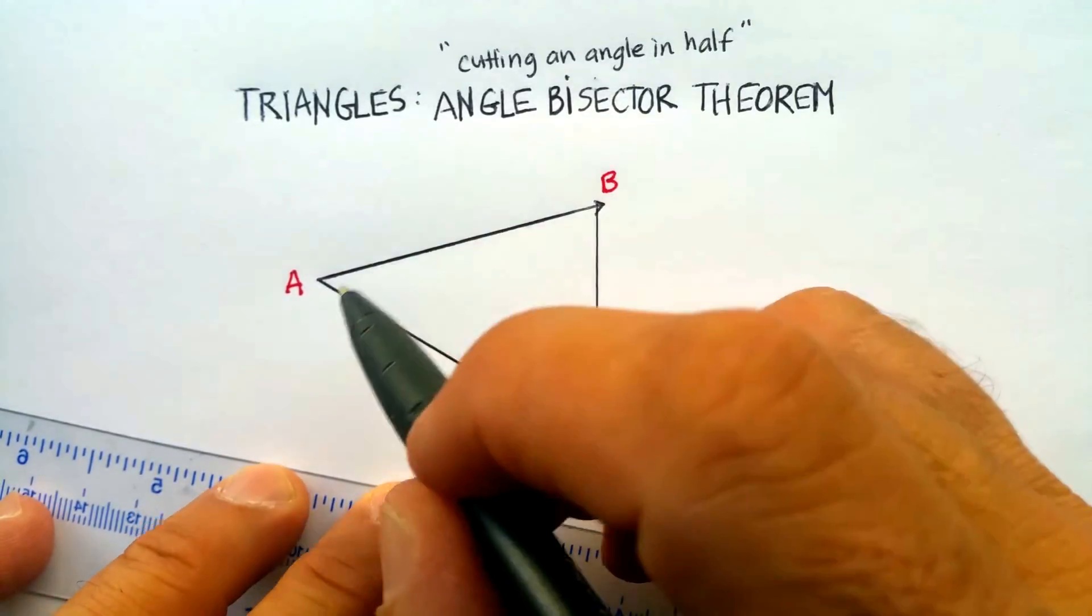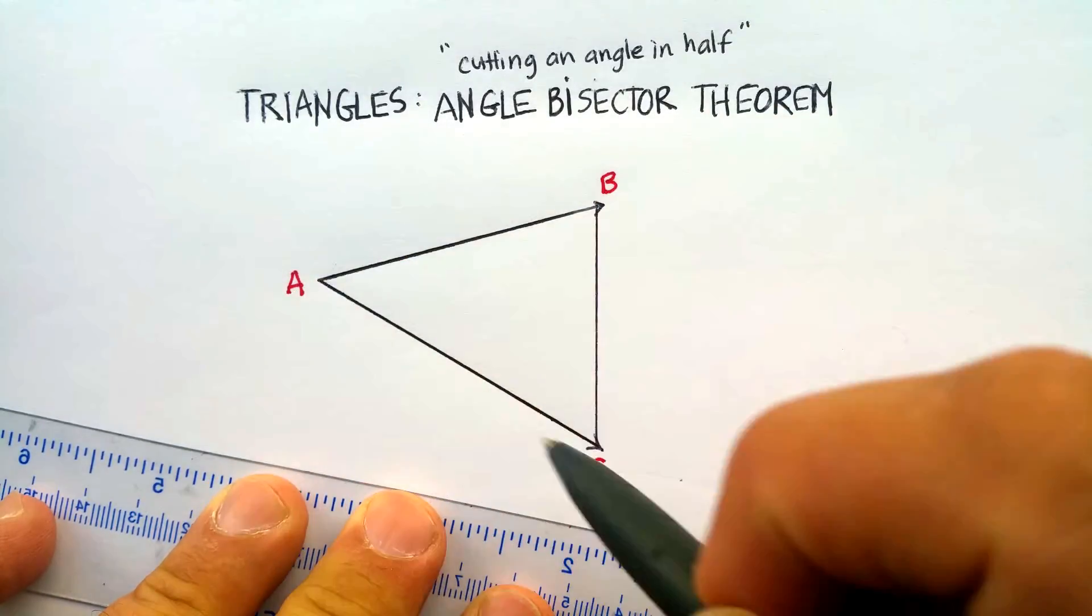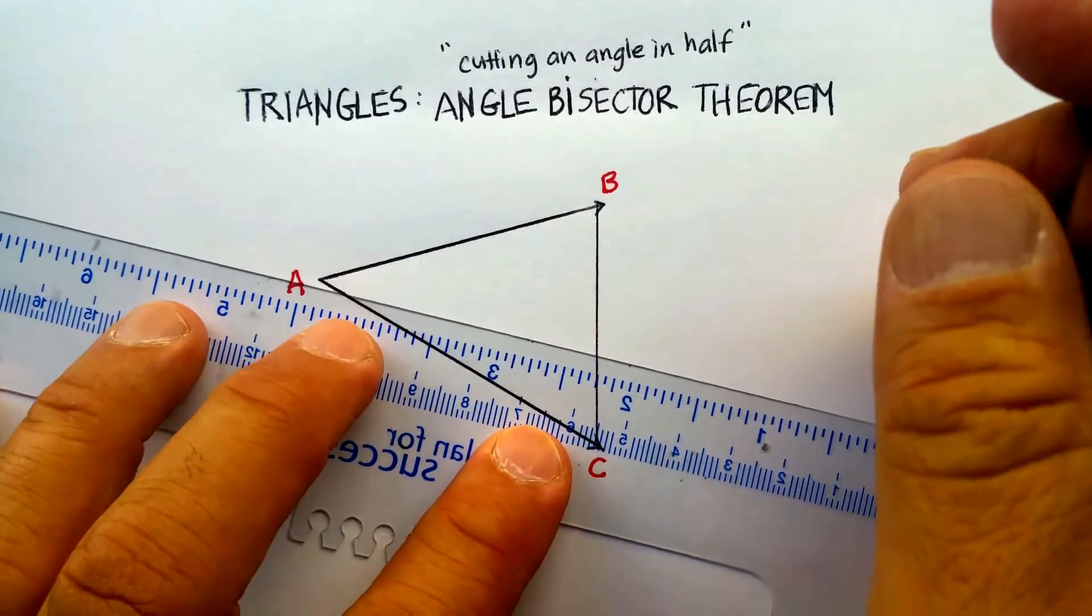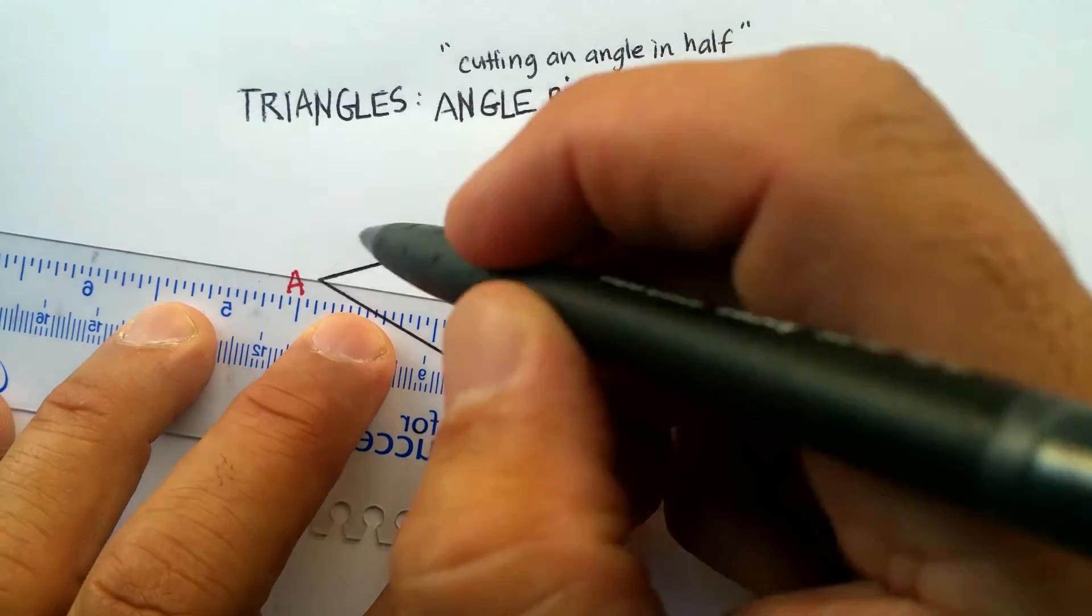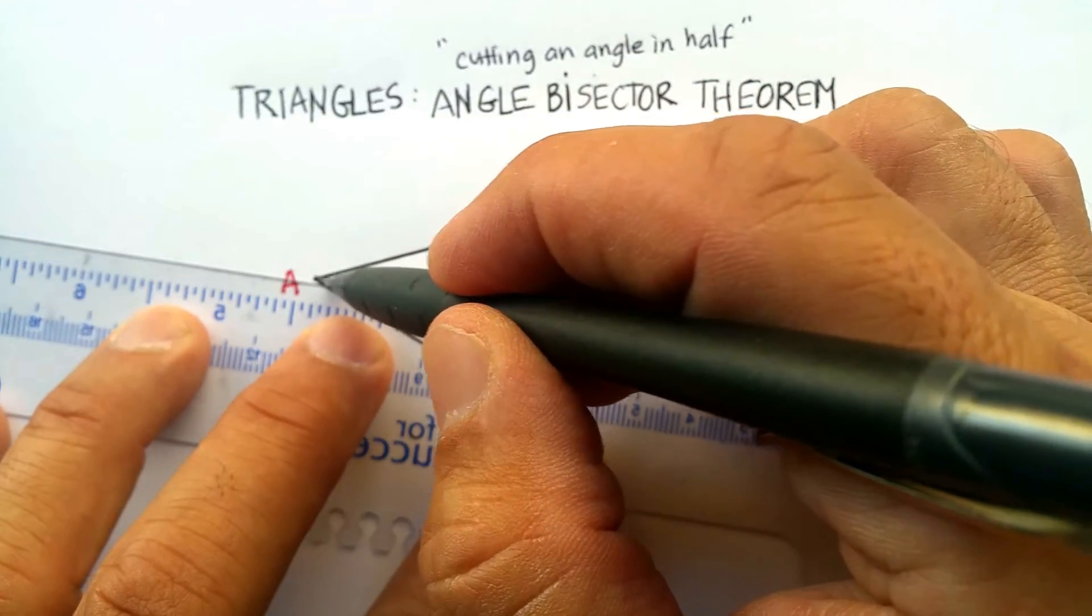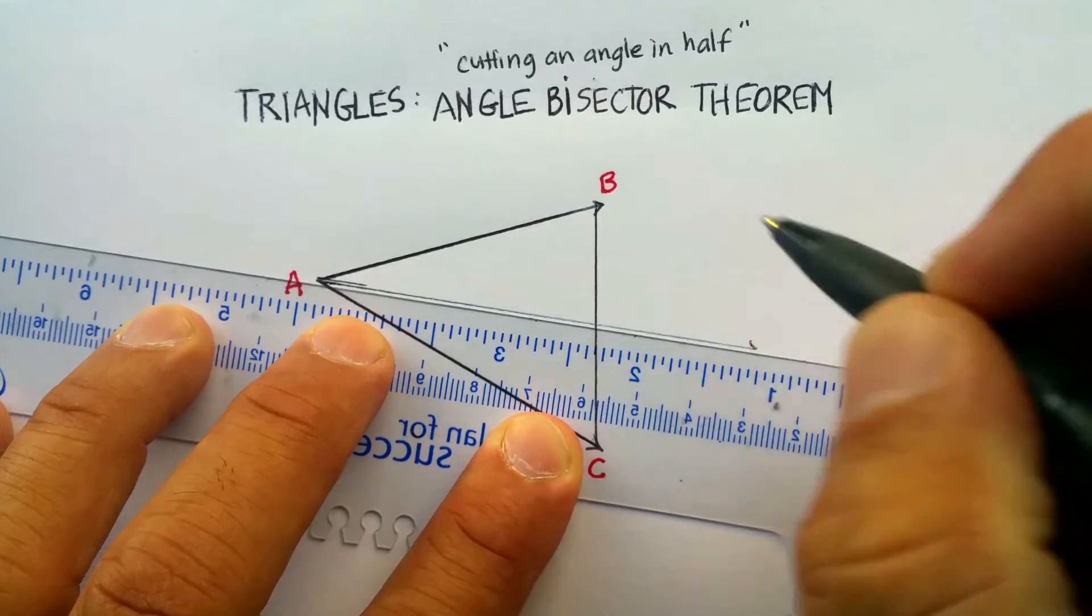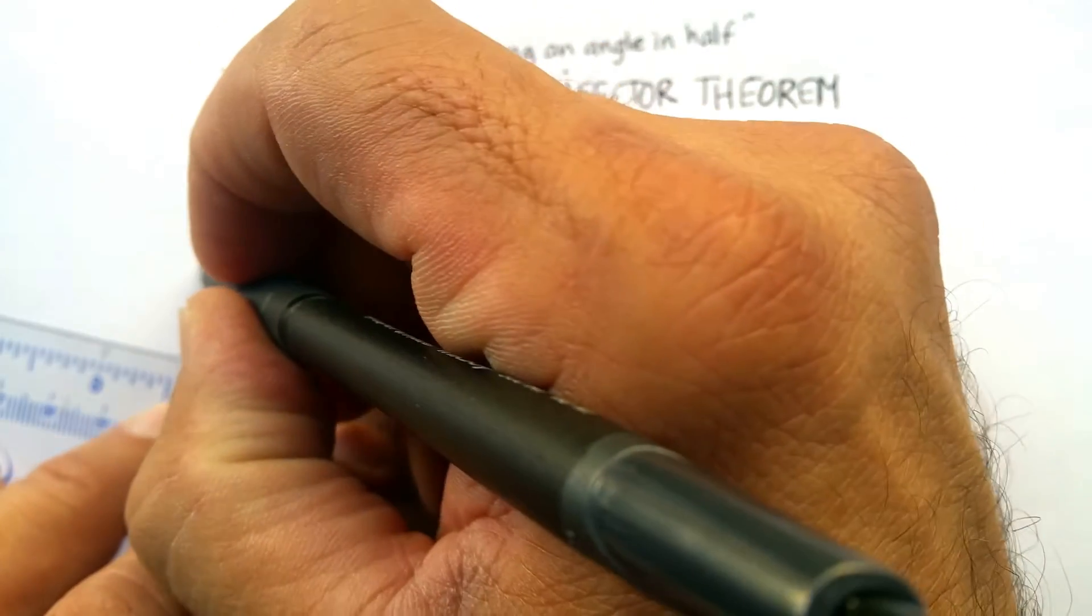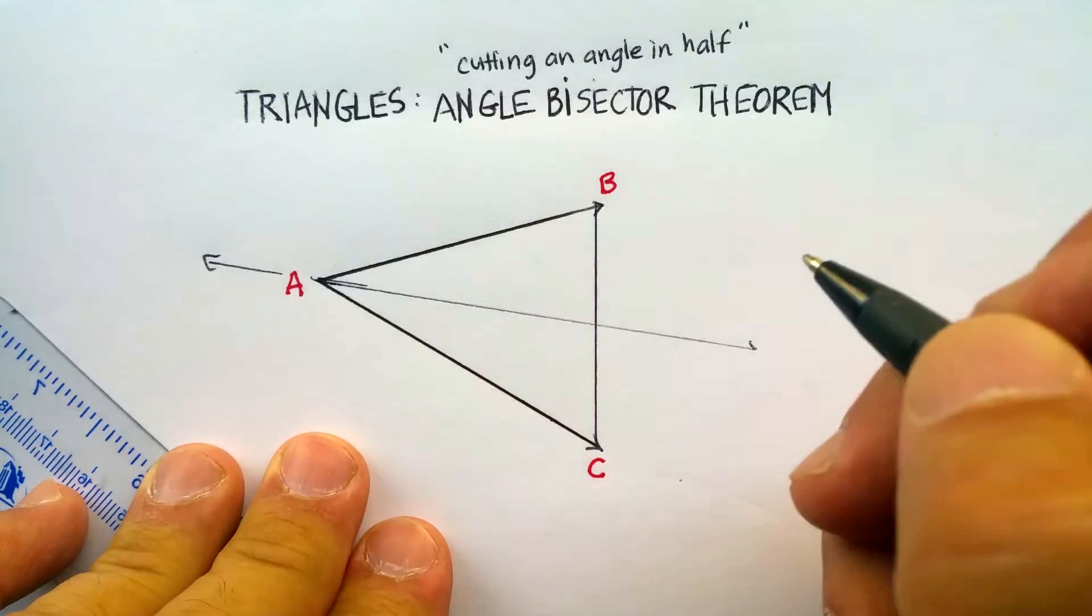So we have triangle ABC. And let's take angle BAC, so this angle right here. And let's go ahead and cut that in half. Let me draw it a little bit better there. There we go. I'm just going to extend that line all the way out there, draw it kind of light, and do the same thing up here. Extend it all the way out there.